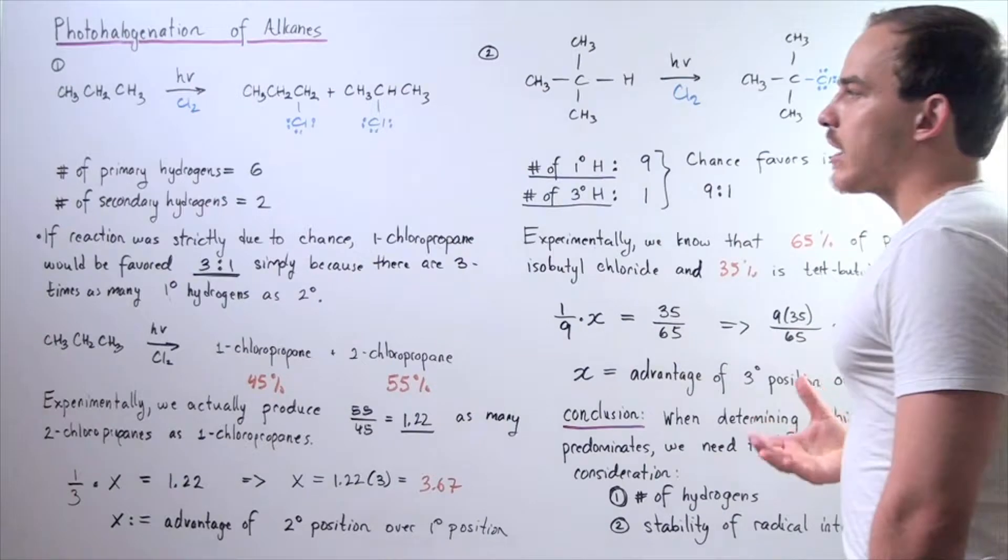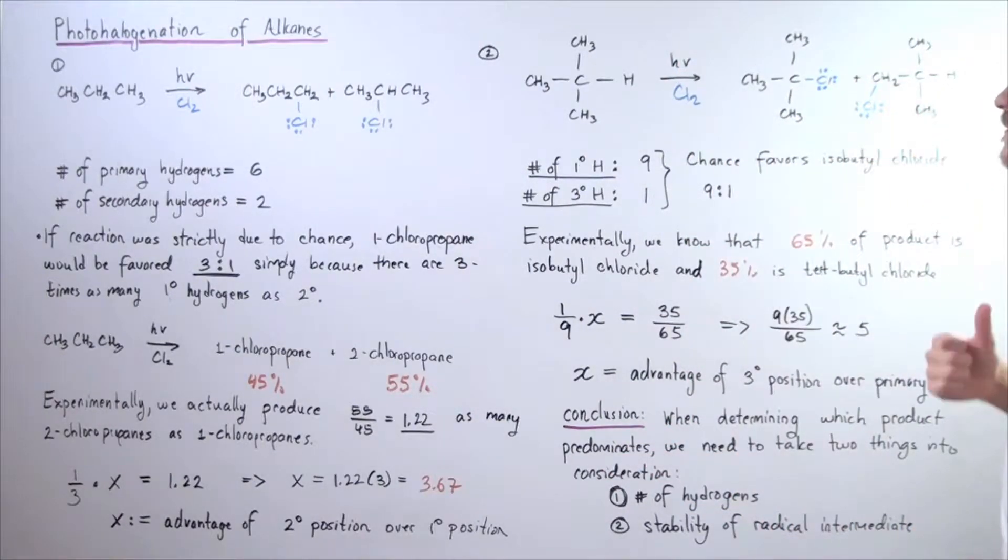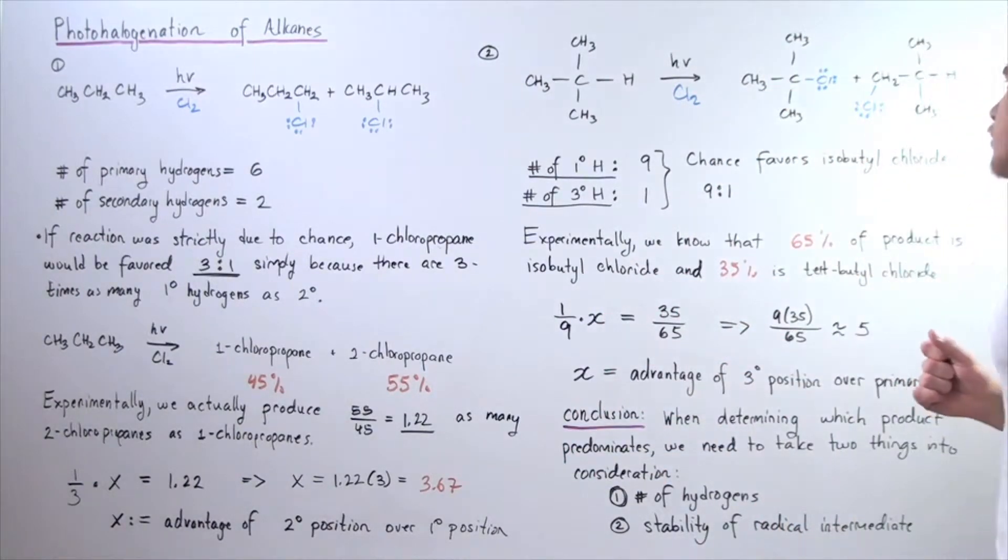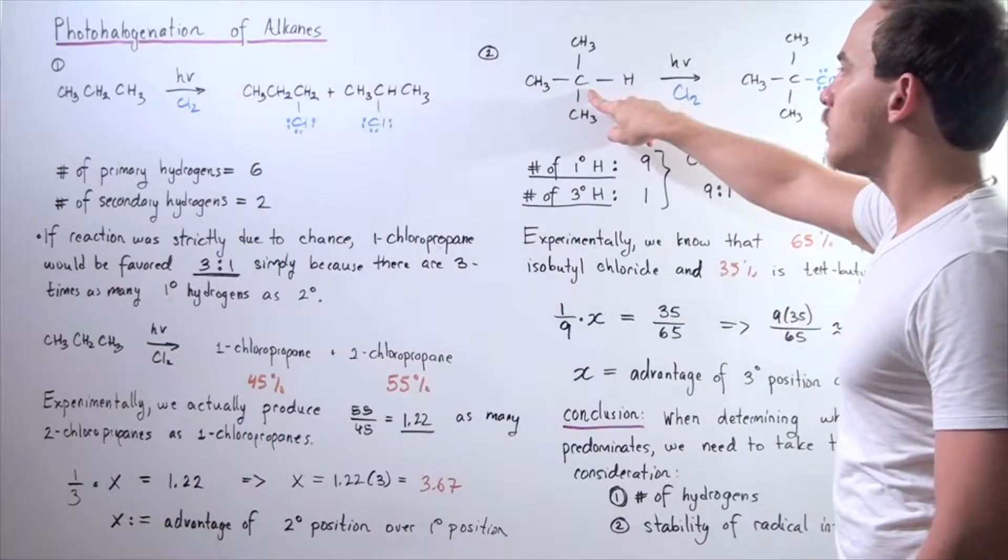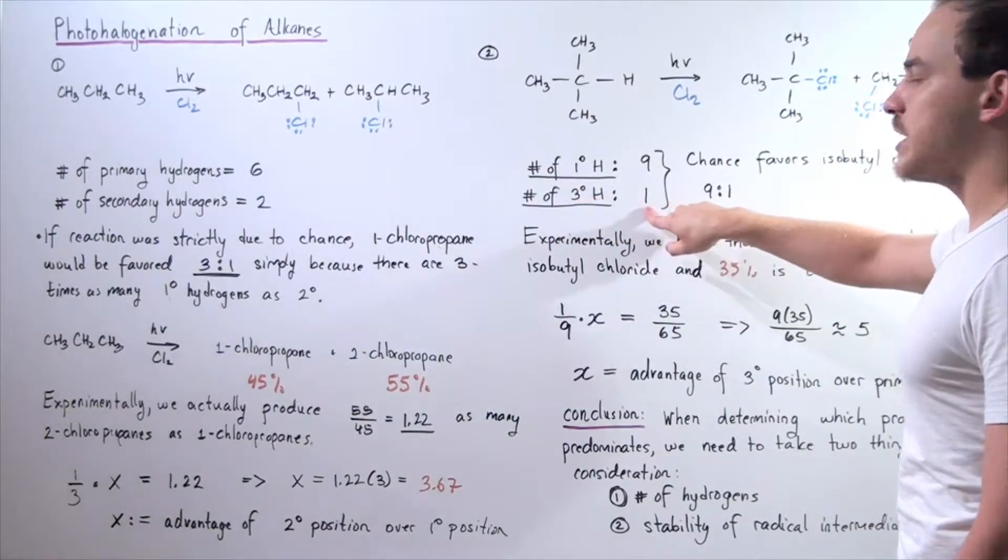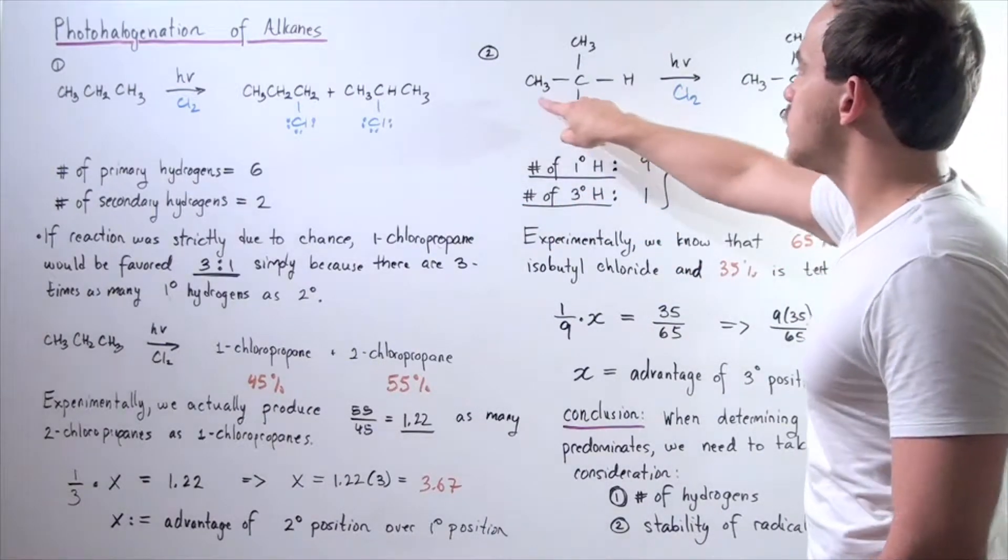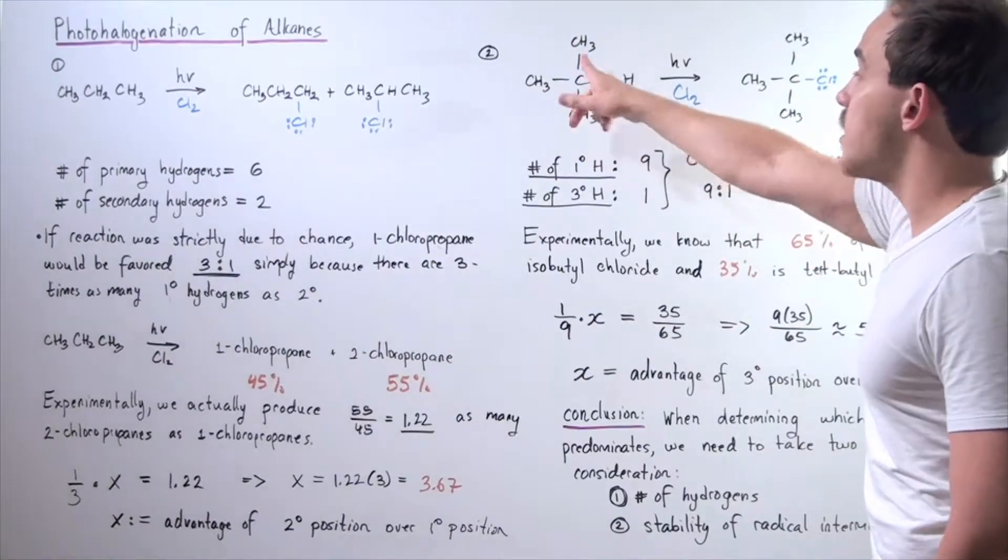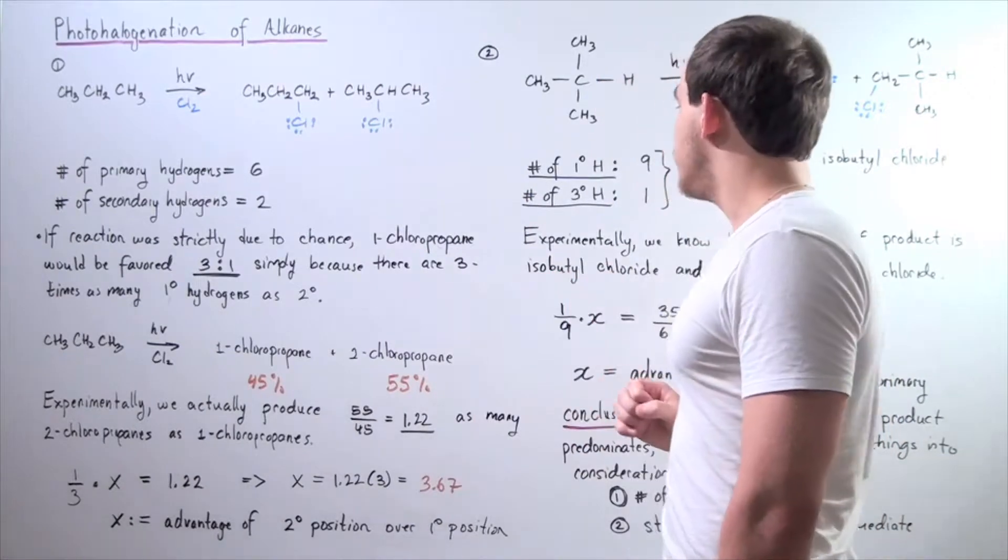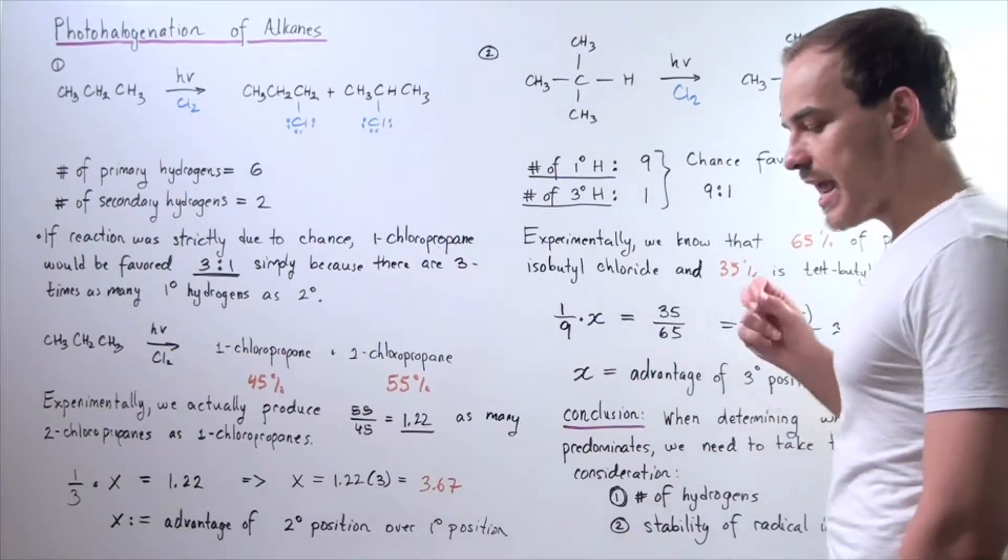Now, let's once again begin our analysis of which one of these is favored. So, let's begin by counting our number of H's and let's compare the number of primary H's to the number of tertiary H's. So, we have 1 tertiary carbon. So, that means that because we have 1 tertiary carbon and it's attached to only 1 H, we have the number of tertiary H's is 1. On the other hand, we have 1, 2, 3 primary carbons and on each primary carbon, we have 3 H's. So, that means we have a total of 9 primary H's.